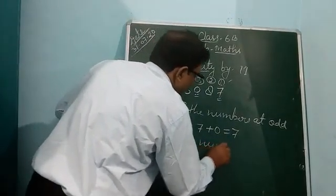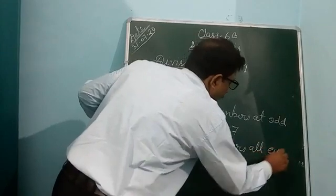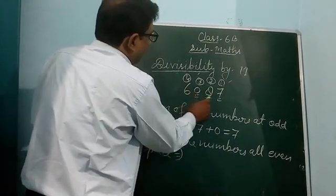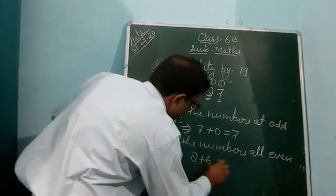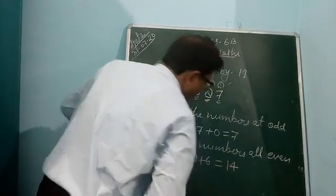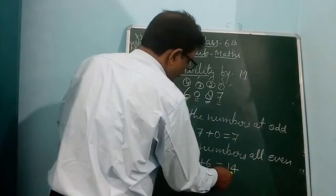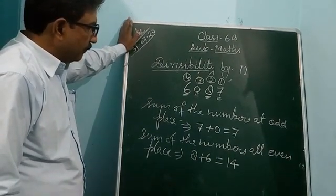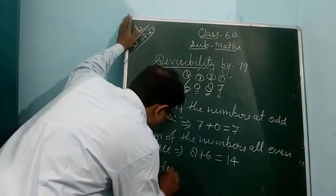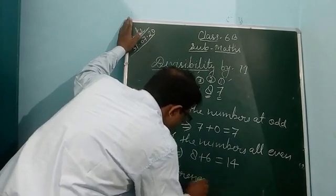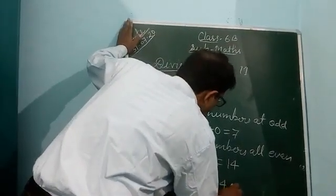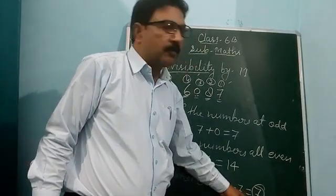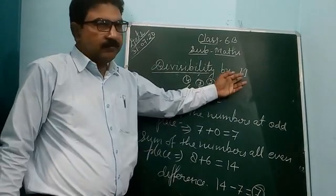Next, sum of the numbers at even places — positions 2 and 4 — means 8 and 6, so 8 plus 6 equals 14. After that, check the difference: 14 minus 7 equals 7. It is not coming 0, or 11, or a multiple of 11. So this number is also not divisible by 11.